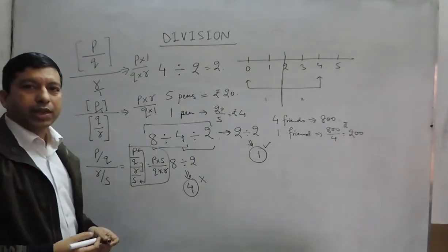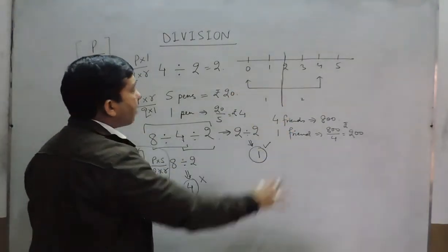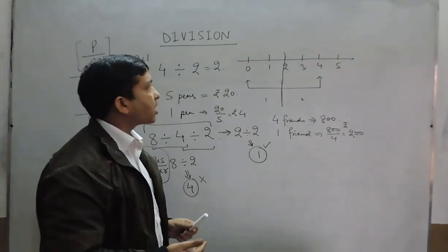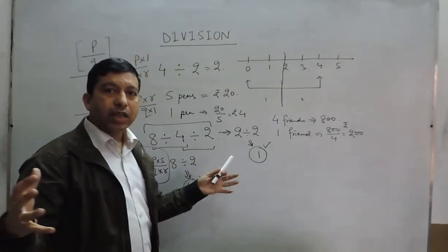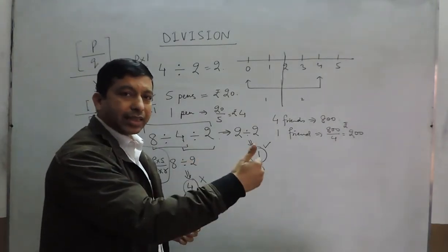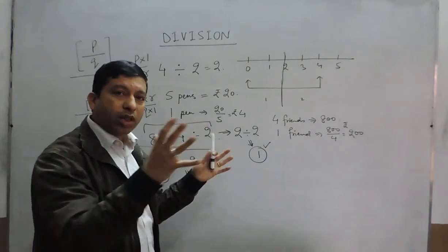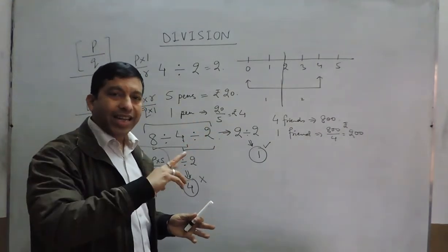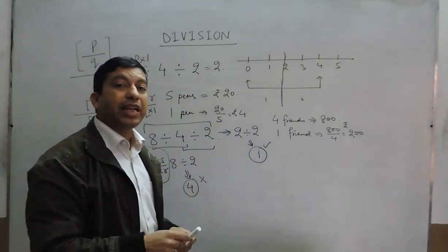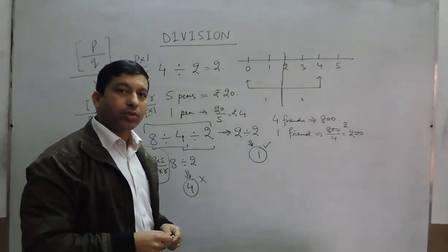So this is basically the whole about division, and in the next video we will discuss DMAS - that is division, multiplication, addition, and subtraction. If all four operators are given or any two operators are given, how we have to solve them and where we basically make mistakes. Thank you.